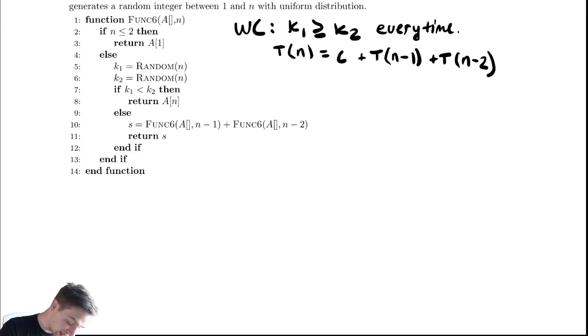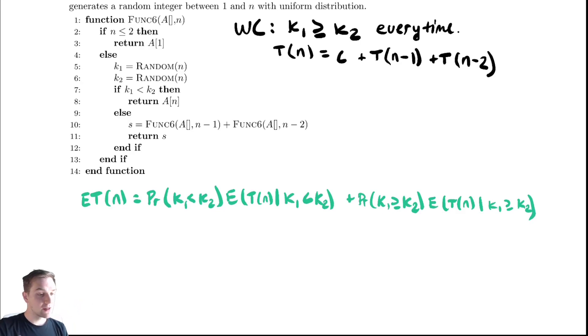So let's come up with our expected runtime. The expected time equals the probability that k1 less than k2 times the expected time given that k1 less than k2, plus the probability that the opposite is true, k1 greater than or equal to k2, times the expected time given that k1 greater than or equal to k2. How likely are those probabilities? You may not intuitively have a good sense of this, so let's try and understand it. I'm actually going to do this graphically - I think this is the best way to understand it.